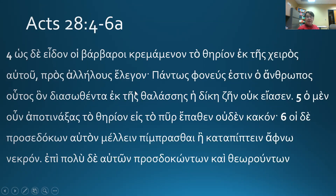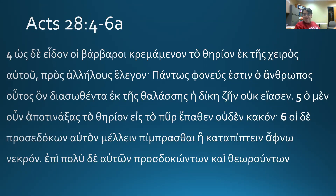They were saying to one another — reciprocal pronoun, imperfect of lego — certainly, completely, a murderer is this man. This man is certainly a murderer. Whom, having been rescued from the sea, justice has not permitted him to live. Which is a natural conclusion for them to draw given their worldview — they have a sense of fate, a fatalism. It would be their perspective that everything happens for a reason. Of course there are some Christians who have baptized that sentiment. But if you're a Wesleyan, that's a very Calvinist perspective — it is not a Wesleyan-Arminian perspective that everything happens because God determined it for a reason.